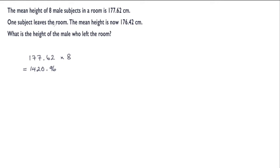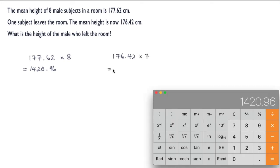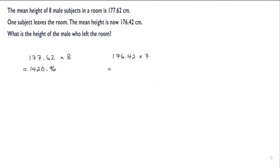We're now told that one of the subjects leaves. So now we have 7 male people in the room and the mean height is 176.42. So in a similar way we're going to do 176.42 and multiply that by 7. Let's bring in the calculator again, 176.42 multiplied by 7, and that's 1234.94.